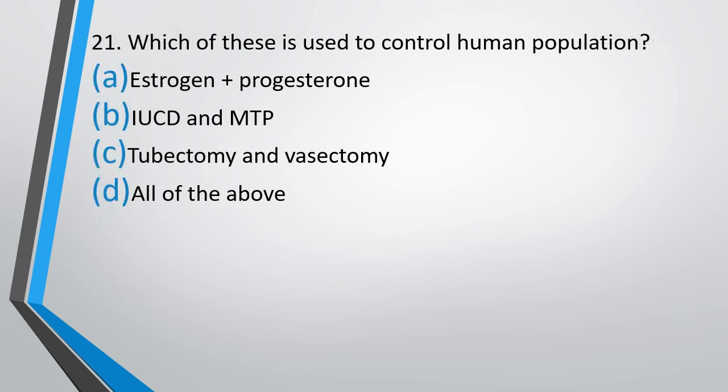Question number 21. Which of these is used to control the human population? The correct answer is Option D — all of the above. This includes estrogen plus progesterone, referring to contraceptive pills.